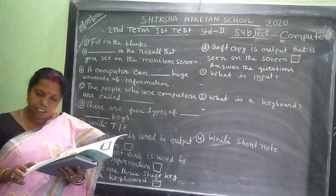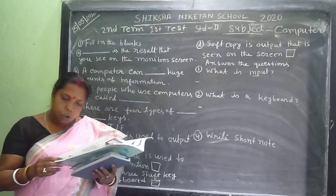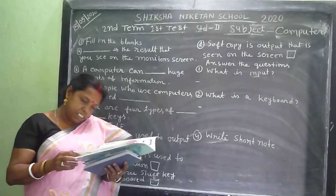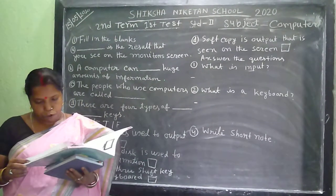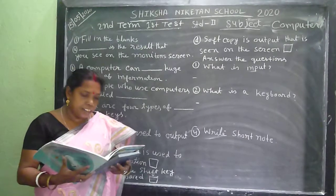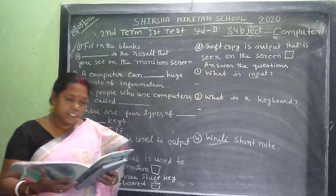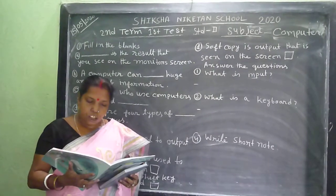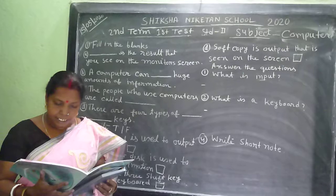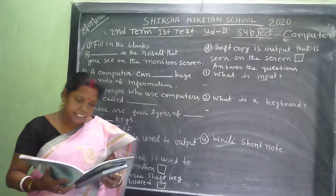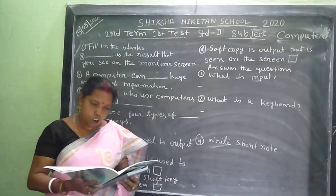Output: after the mixer processes the milk and mangoes, juice is produced. This is the output of the mixer. Similarly, once the CPU has processed the data, it is converted into useful information. This information is called the output of the computer. There are two types of output: soft copy and hard copy. The result or output that you see on the monitor screen is the soft copy. The result or output that the computer produces can also be printed. The output of the computer on a piece of paper, cloth, etc. is called the hard copy. The various output devices include the monitor, printer, and speakers.